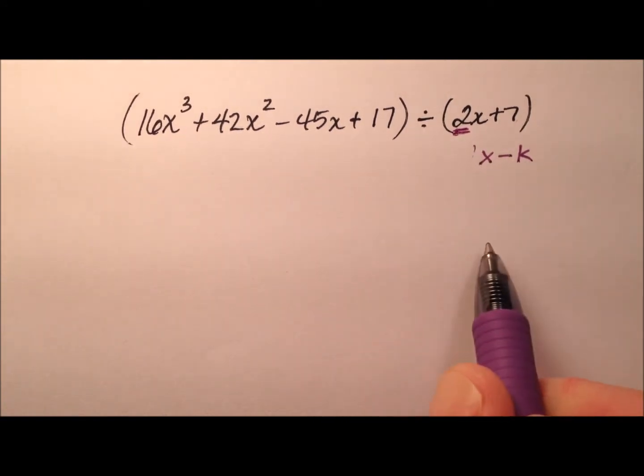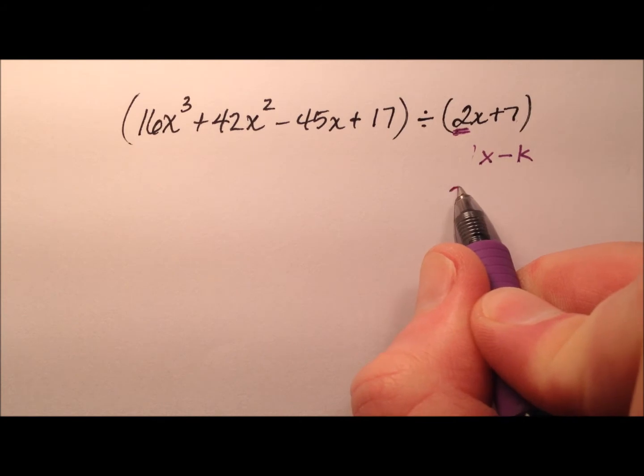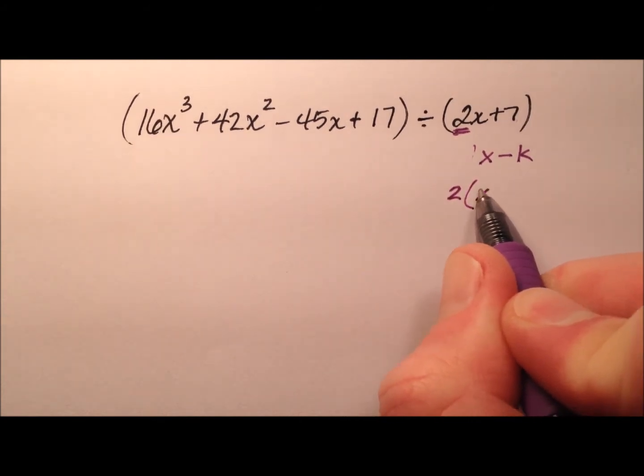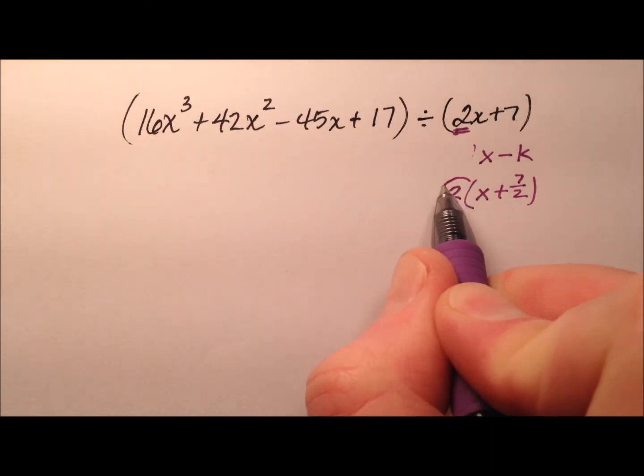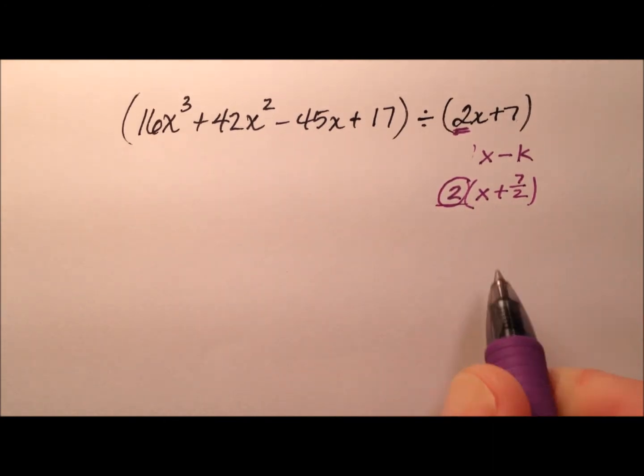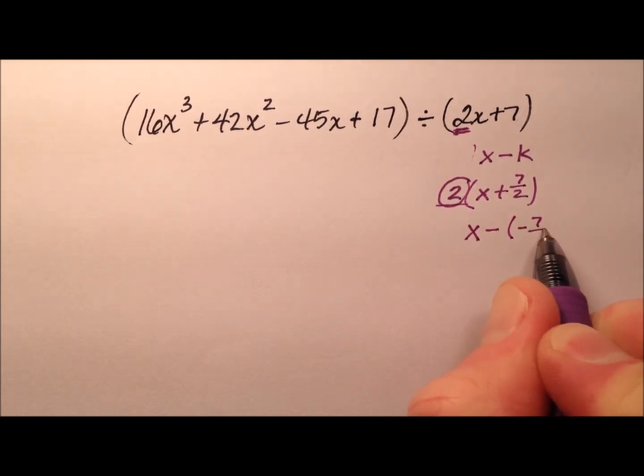So let's go ahead and divide or factor out this 2. So I'll have x plus 7 halves. And we're going to come back to this 2 at the end, so don't worry about it. But now we are in x minus k form because k is negative 7 halves.